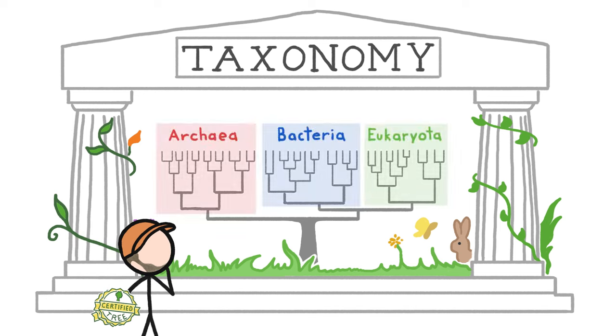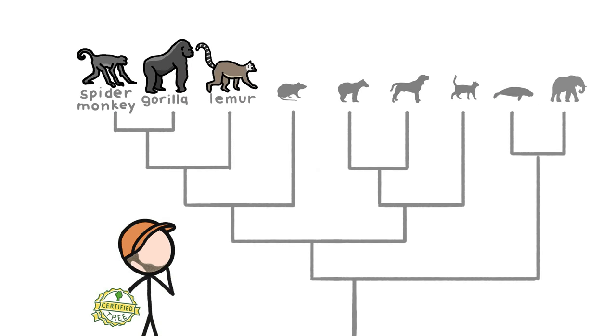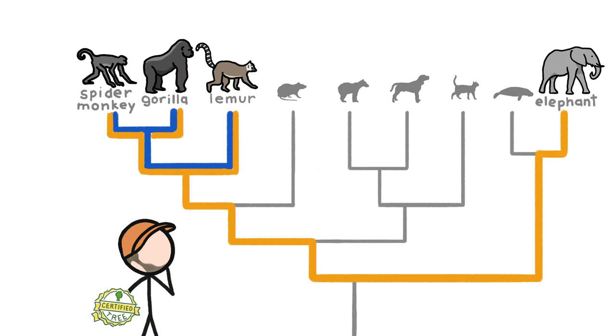After all, we classify most groups of organisms by their genetic relationship to one another. For example, all primates are more closely related to each other than they are to non-primates. Maybe we can do the same with tree mates.